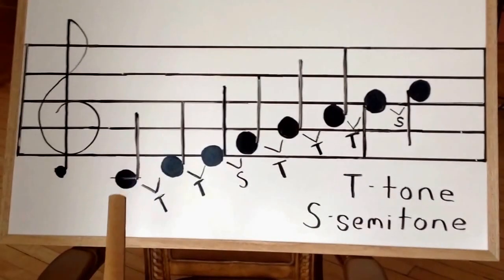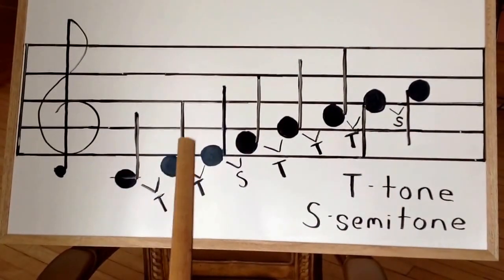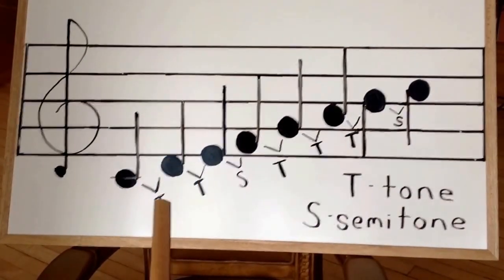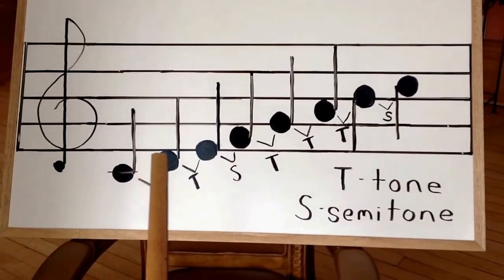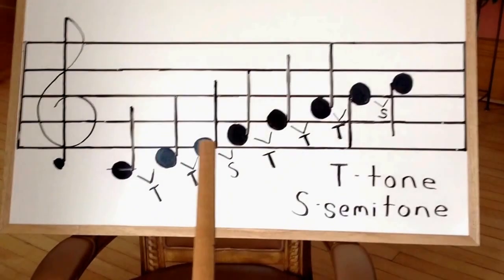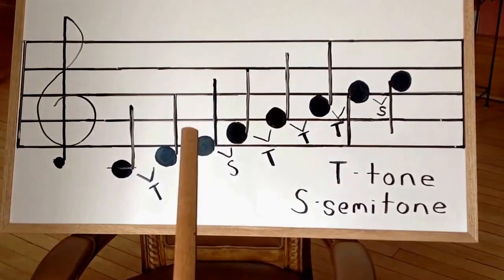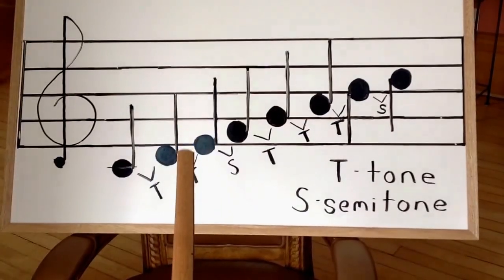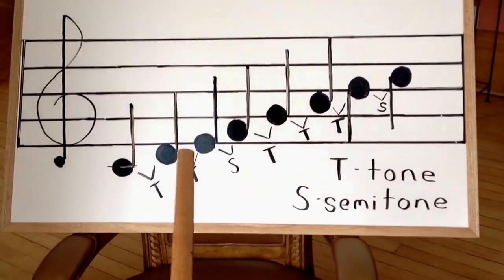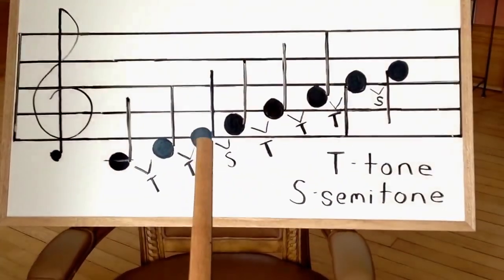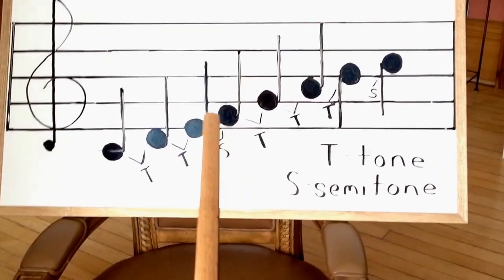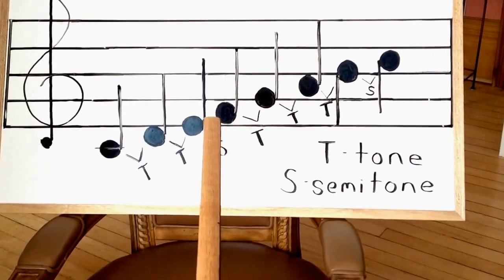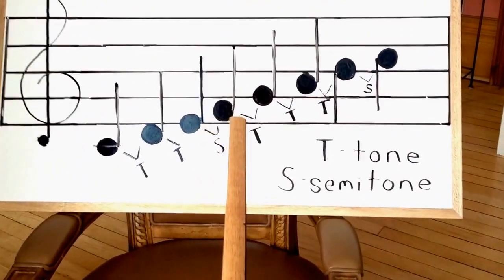We have C to D, a tone because you skip C sharp or D flat. D to E is a tone because we skip D sharp or E flat. And E to F is a semitone — there are no notes in between those two to skip.